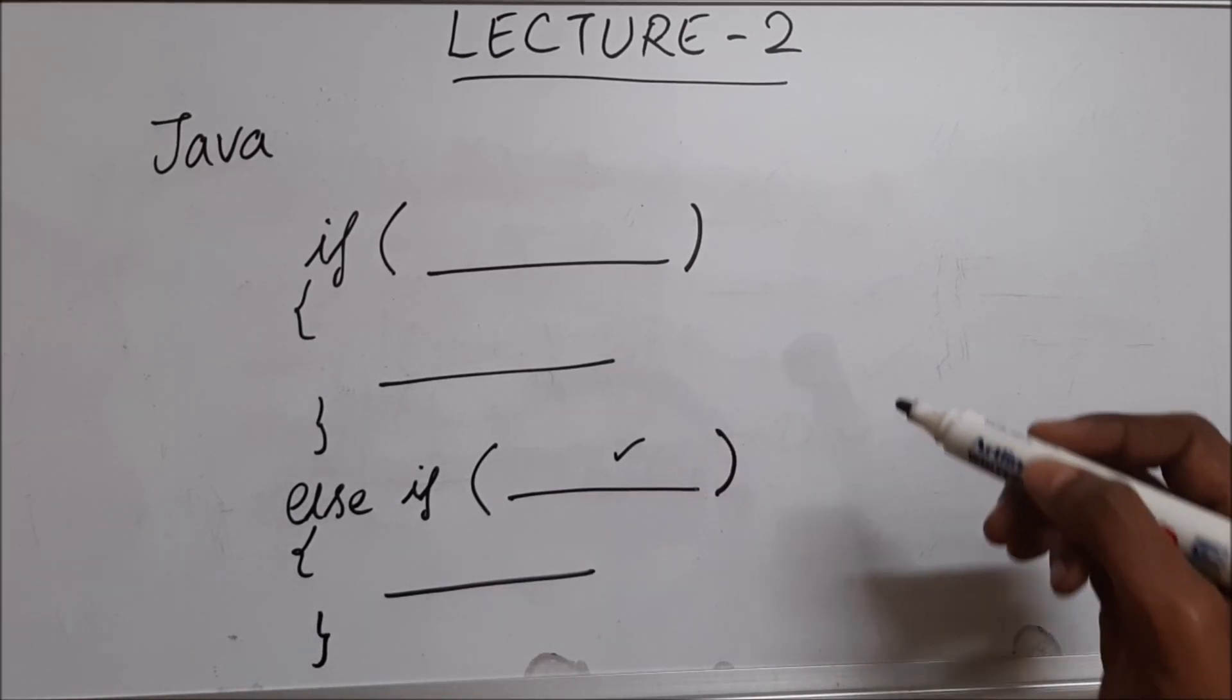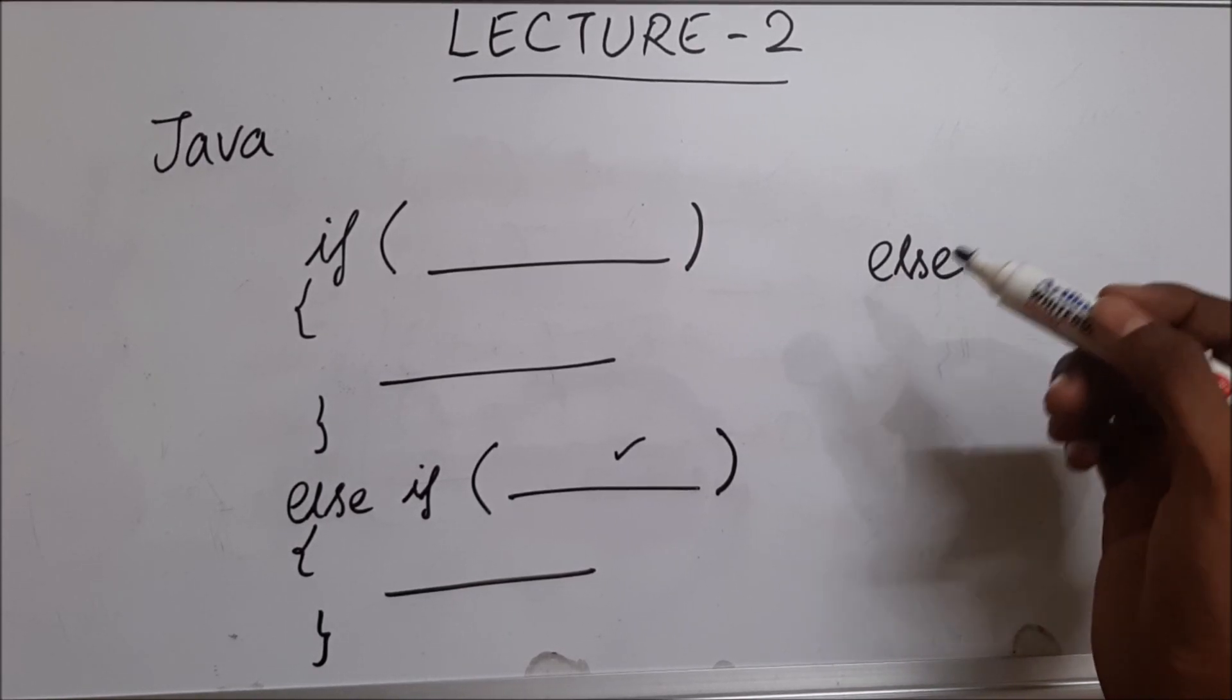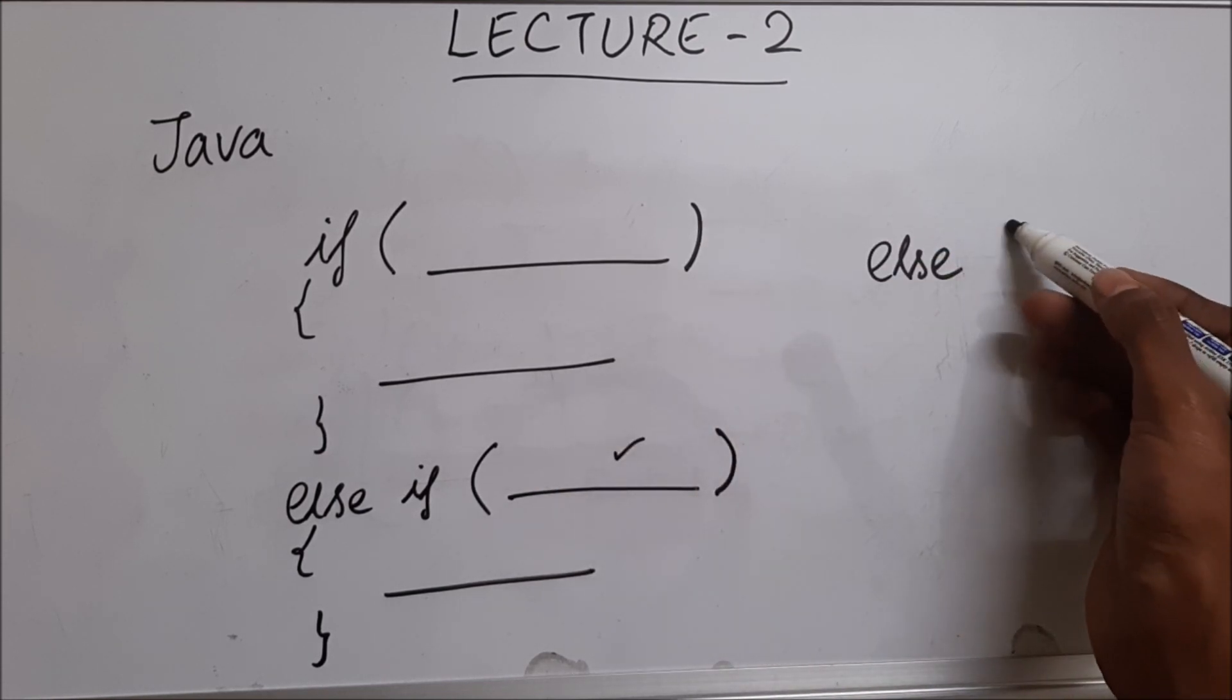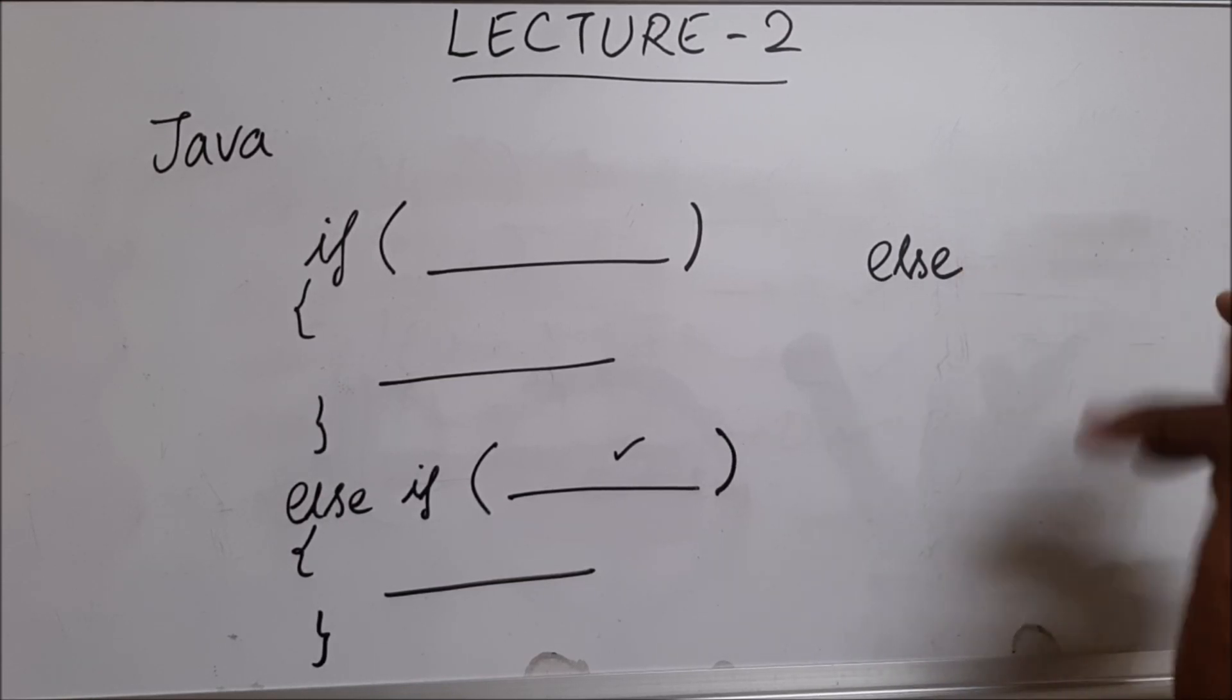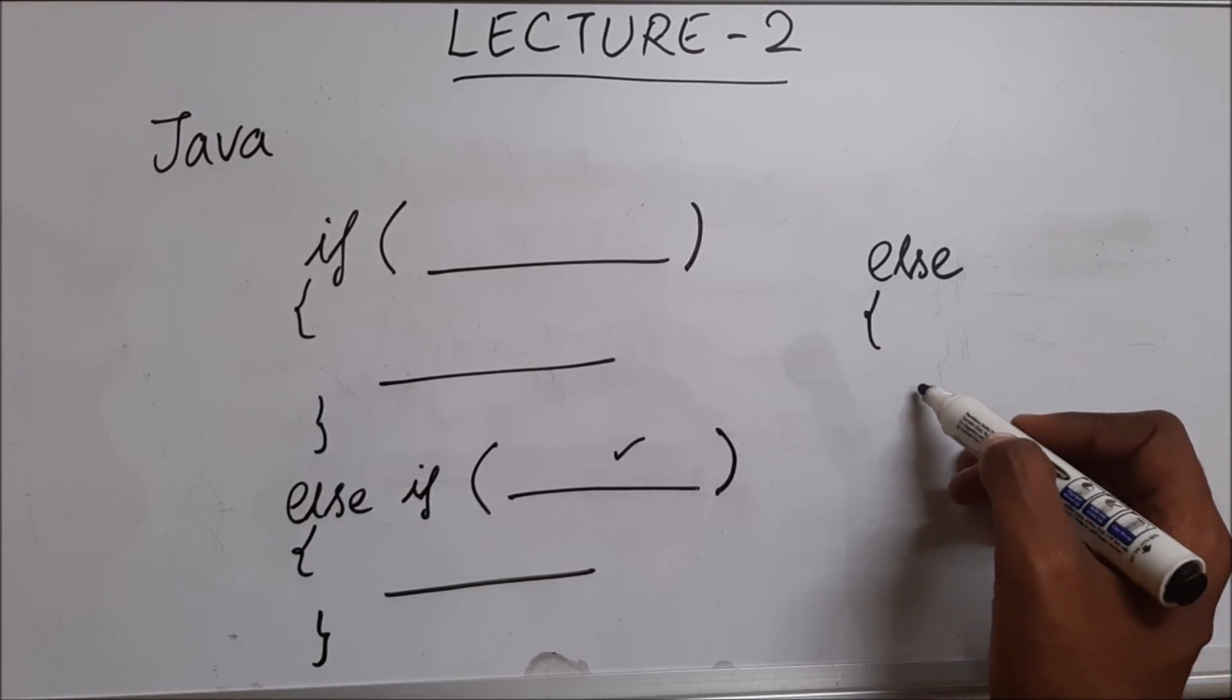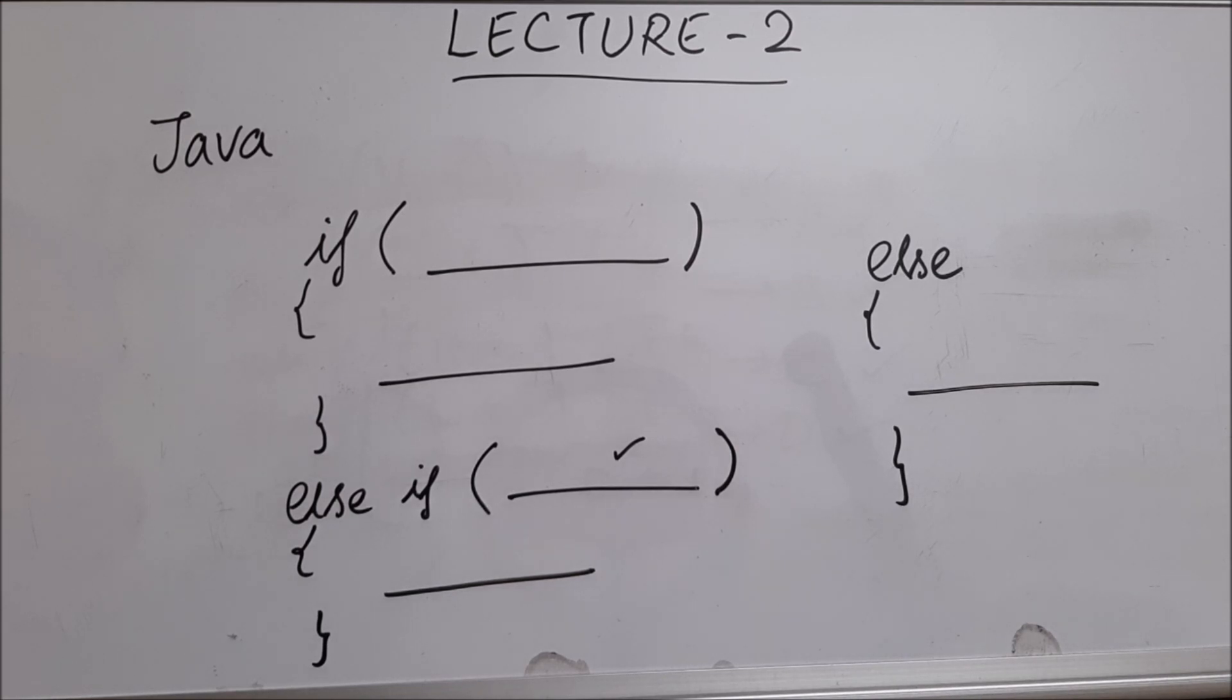For else, it is a little different. Since else represents anything and everything other than if and else if, we need not put any condition. This is not required. We'll just say else, we'll open the braces, we'll write what needs to be done, and then we'll close it.